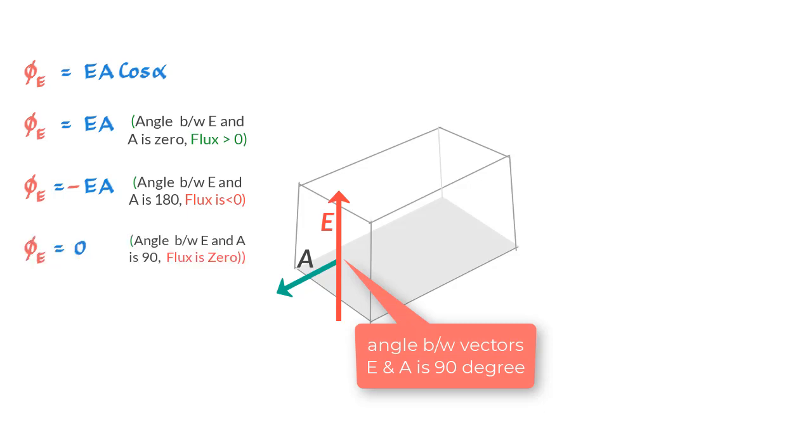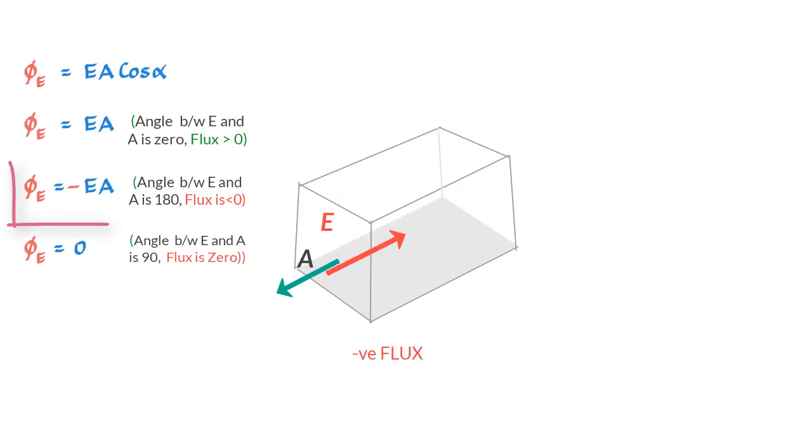And finally, if the field vector is just skimming the surface, the angle between vector A and E would be 90 degrees, making the flux zero. So to sum up, an inward piercing field is a negative flux, an outward piercing field is a positive flux, and a field that skims the surface has zero flux value.